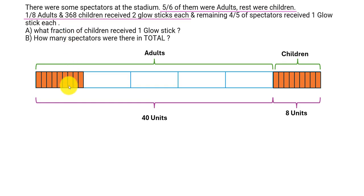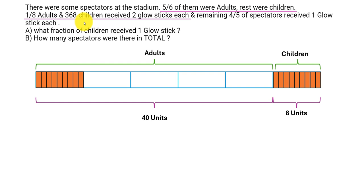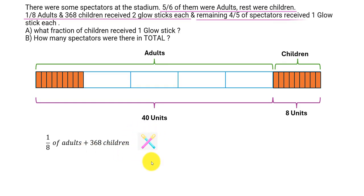So one-eighth of adults plus 368 children received two glow sticks each. And the remaining four-fifths of spectators received one glow stick each, which means the group that received two glow sticks is one-fifth of spectators. So one-eighth of adults plus 368 children is equal to one-fifth of spectators. The remaining is four-fifths, meaning this amount is equal to one-fifth of spectators.